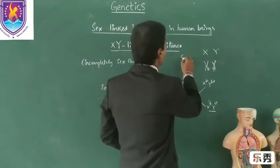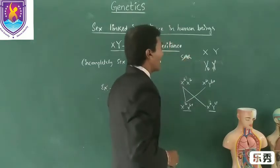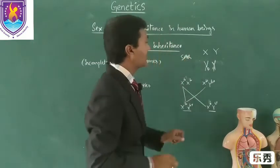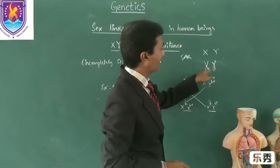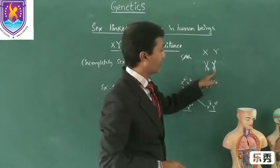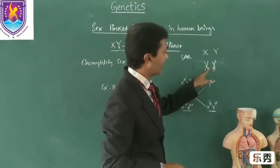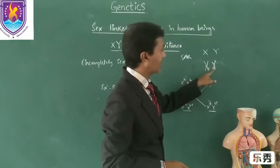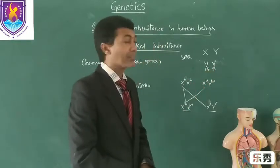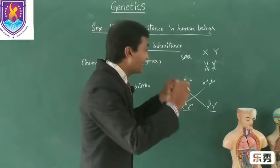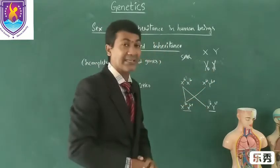Pseudo-autosomal regions are the regions — let us assume this is the X chromosome and this is the Y chromosome — where both chromosomes have the same type of genes. So these shared genes are responsible for this type of inheritance.